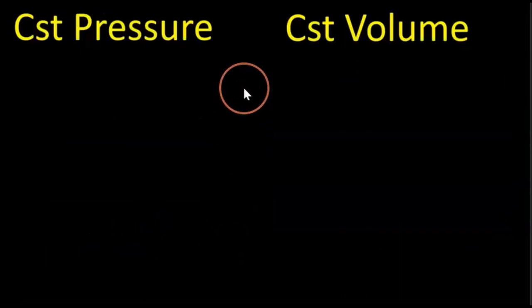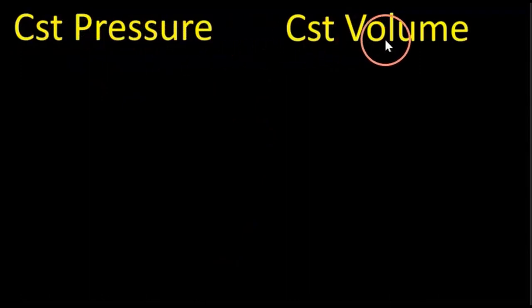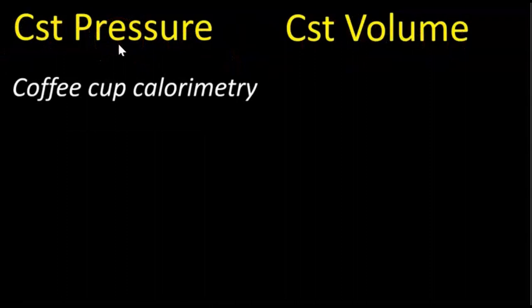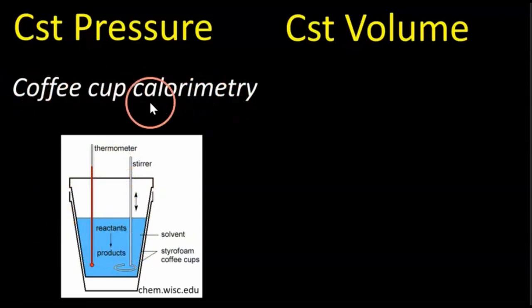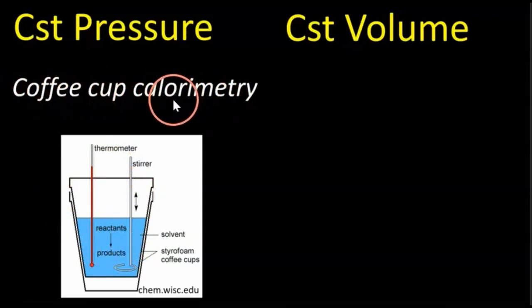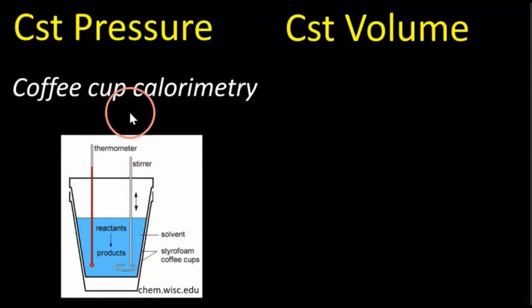There are two main types we worry about in general chemistry: constant pressure calorimetry and constant volume calorimetry. In constant pressure calorimetry, it's open to the environment. A common one seen in first year labs or high school labs is coffee cup calorimetry, because it's cheap and easy. You have an insulated coffee cup open to the atmosphere, so it's under constant pressure.